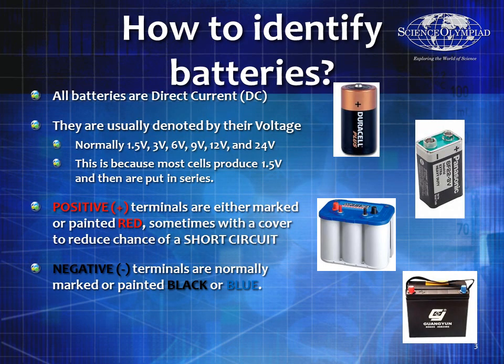We also discussed how to identify batteries. Keep in mind, all batteries are going to be direct current. They're usually denoted by their voltage: 1.5 volt, 3 volt, 6 volt, 9 volt, 12 volt, and 24 volt batteries are very standard, but there are other voltages.